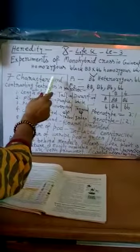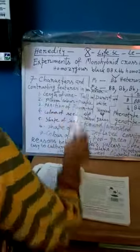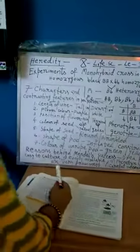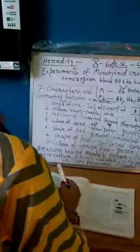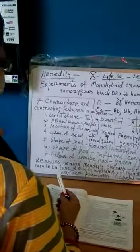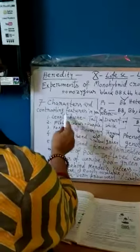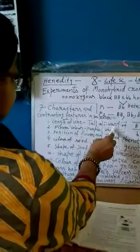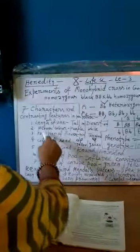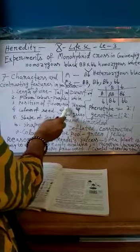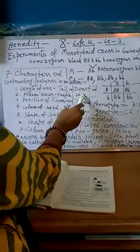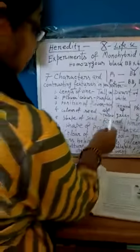Seven characters and contrasting features in pea plants. The pea plant which Mendel used has: length of vine, the plant has a stem that grows up, the length can be either tall, like one meter, or dwarf, like point five meters. Flower color can be purple and white. Position of flower can be axial, meaning on the side of the stem, or terminal, meaning at the top portion. Color of seed can be yellow or green.